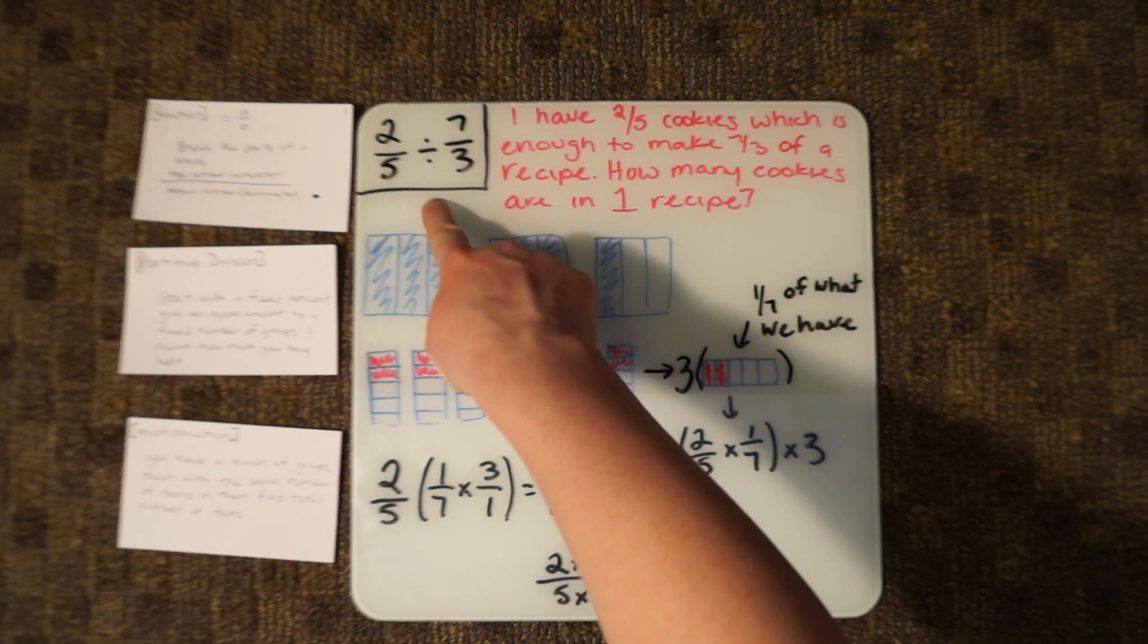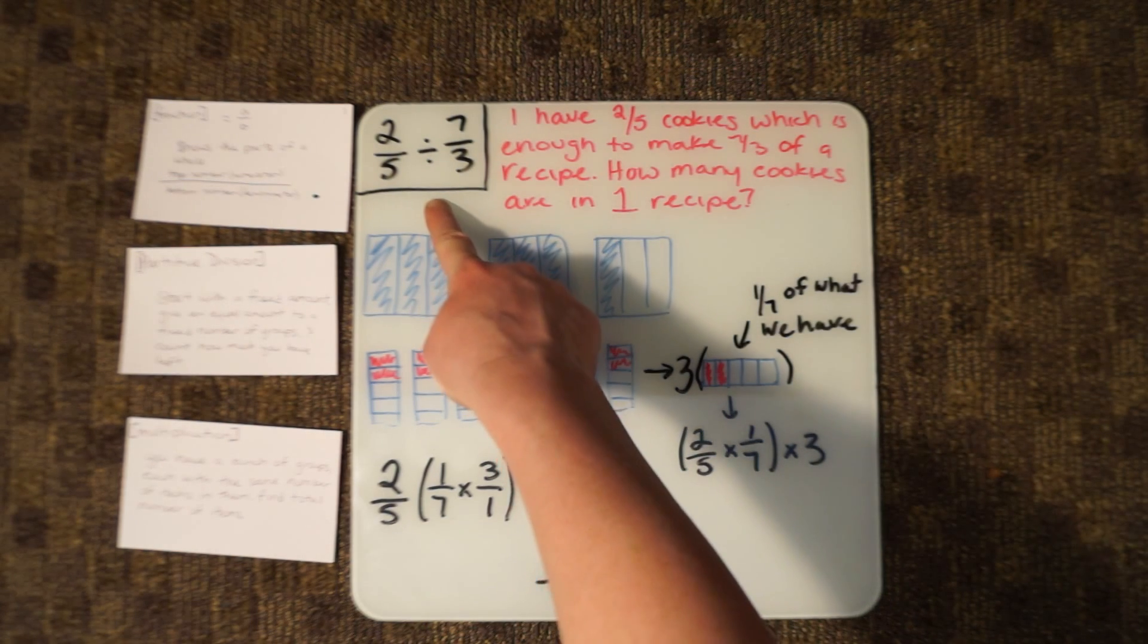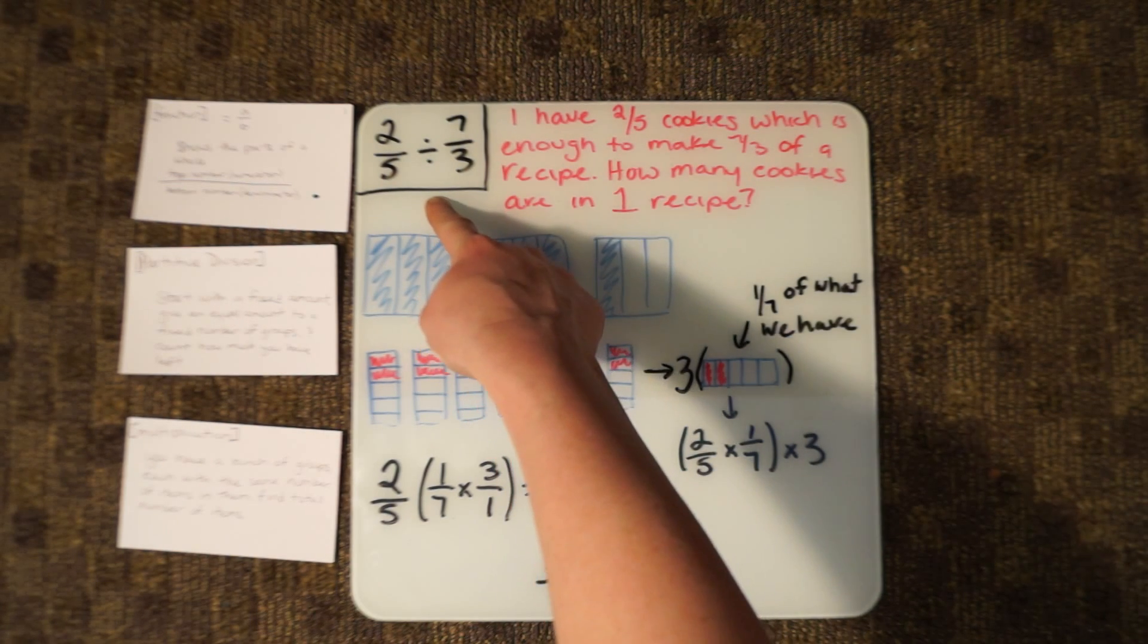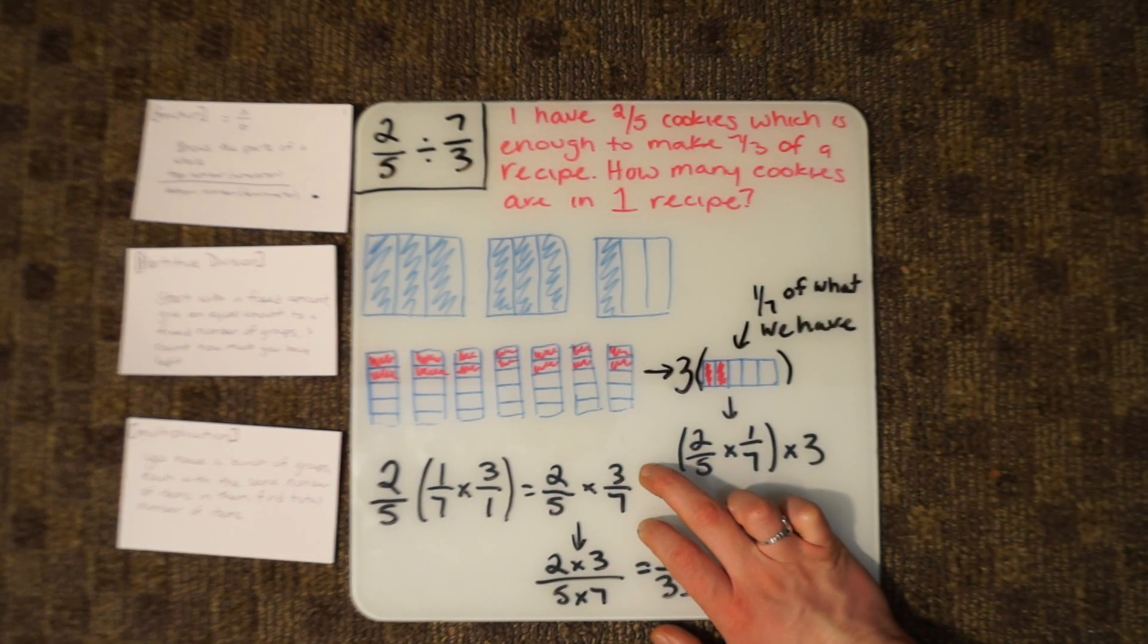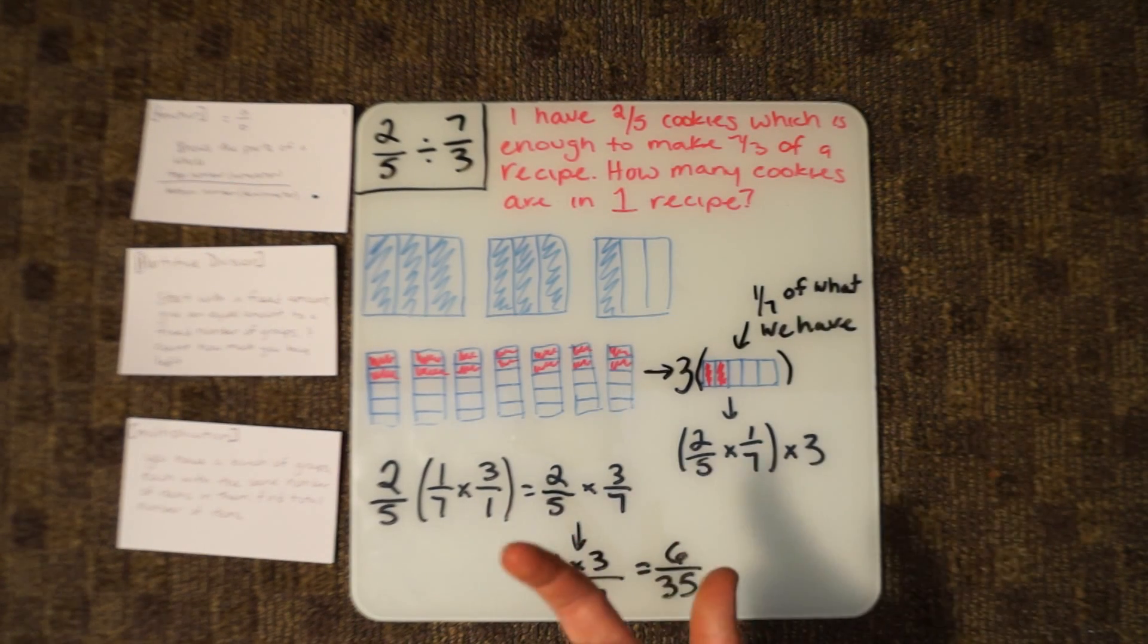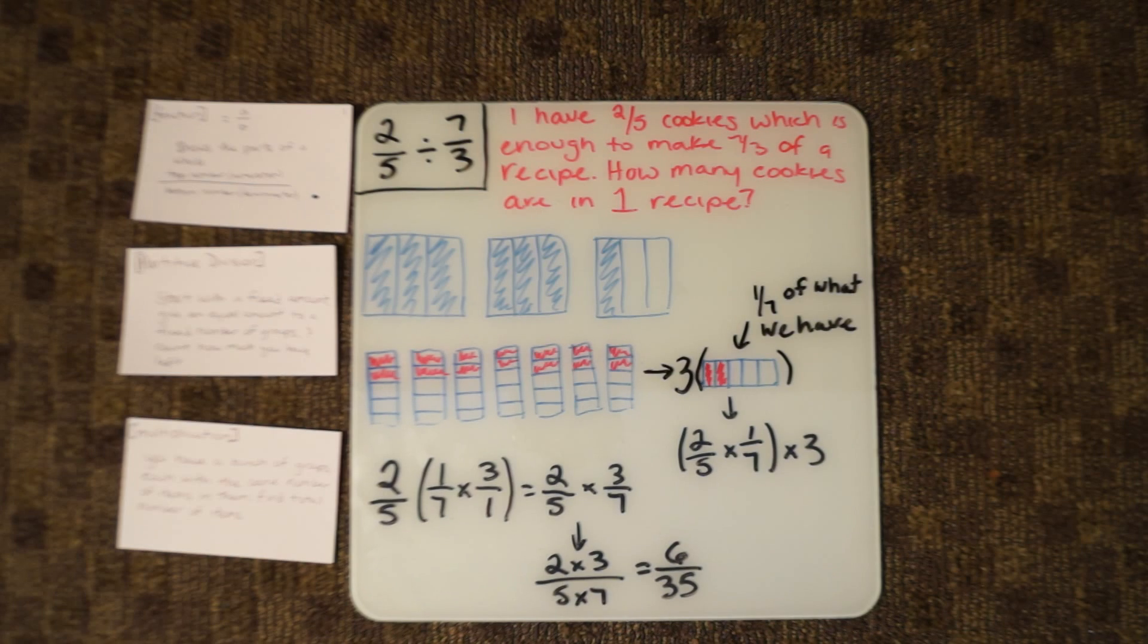If we refer to our original problem, our original problem is 2/5 divided by 7/3. So we can see here that this is why we can invert and multiply. We flipped the second fraction and multiply.